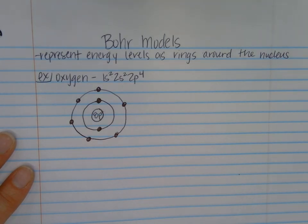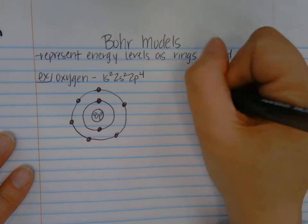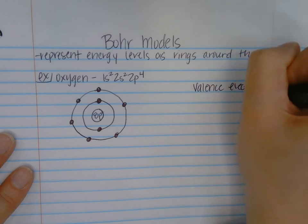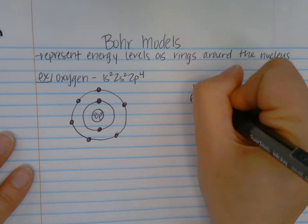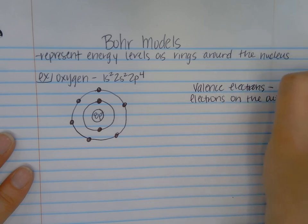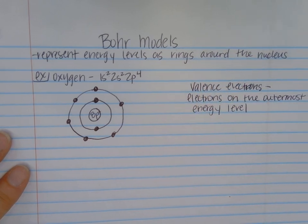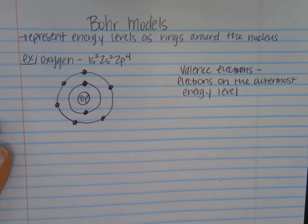One thing I want to point out is that the electrons on the outermost ring are also called valence electrons. Valence electrons are the electrons on the outermost energy level. So in this case, oxygen would have 6 valence electrons because they're on the outermost energy level.